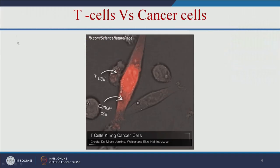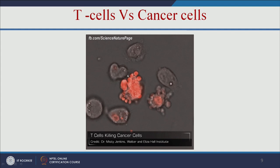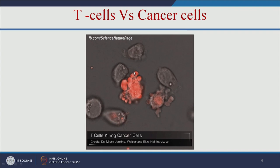Let us see this animation. The long cell is a cancer cell and this one is the T cell — your immune cell. It is coming and attacking the cancer cell and destroying it. That means if your immune system is strong, it will at least protect you from developing cancer or tumor.